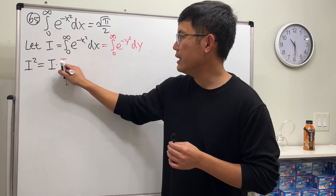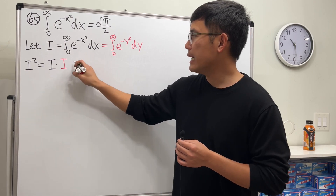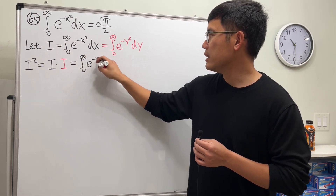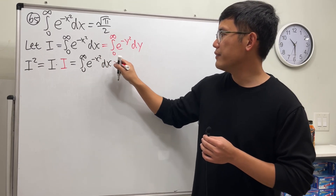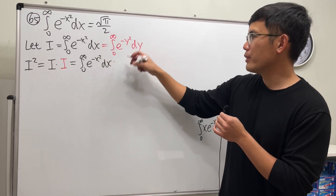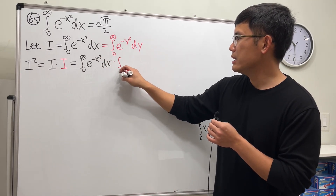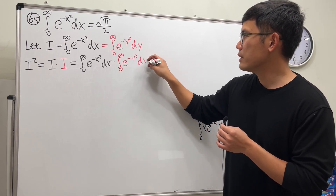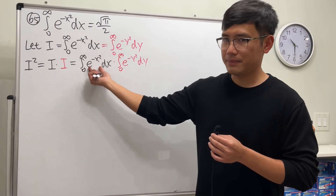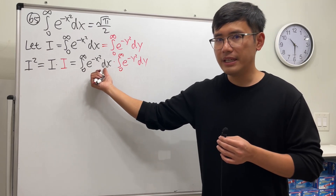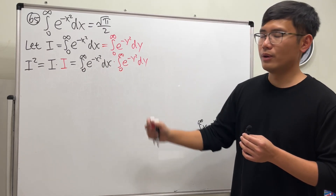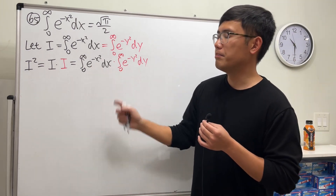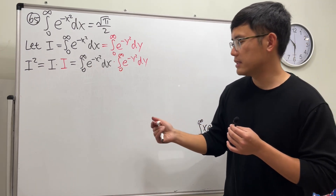I squared is I times I. The first I, in black, is the integral from zero to infinity of e to the negative x squared dx. The second I, in red, is the integral from zero to infinity of e to the negative y squared dy. One is in the x-world, one is in the y-world. Multiplying the insides together, we add the exponents because they share the same base.